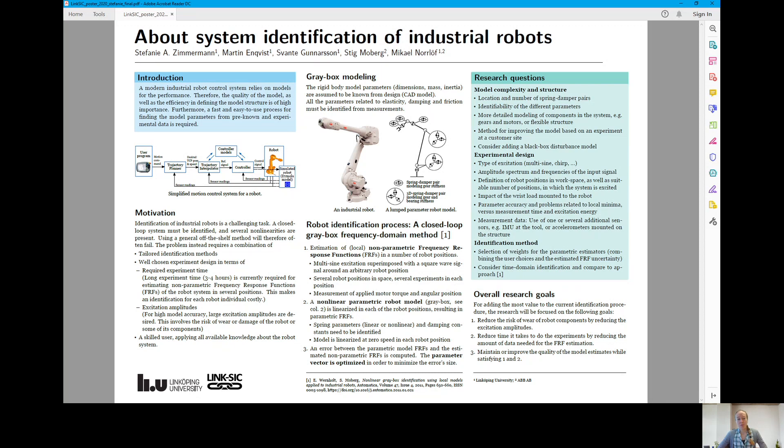Another idea for improving the current identification method is to add one or several additional sensors for gaining additional measurement data that can be used in an identification process. For example, mounting an IMU at the tool or accelerometers onto the structure are two possibilities here.